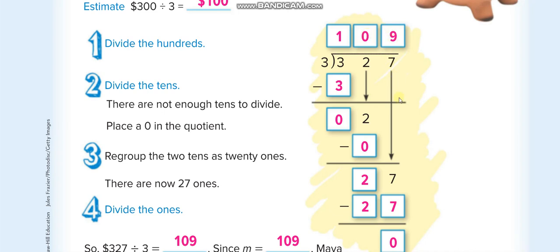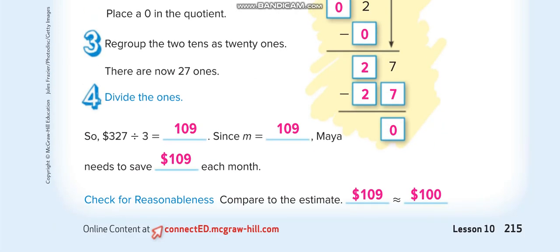The easiest step I told you, just write the 0 and bring another number down. So 3 times 9 is 27, 27 minus 27 equals 0. So the quotient is 109, the estimate is 100.